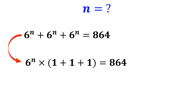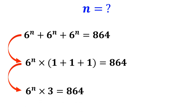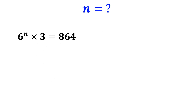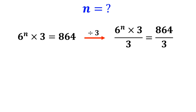6 to the power of n times (1 plus 1 plus 1) equals 864, which simplifies to 6 to the power of n times 3 equals 864. Now we divide both sides of the equation by 3, giving us 6 to the power of n equals 288.